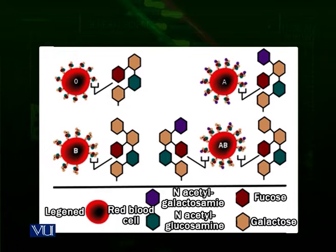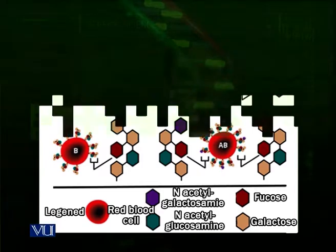The second system is RH. RH is another type of antigen which was first discovered in rhesus monkeys, so it was named RH. This antigen is either present or absent. People who have the RH antigen on their blood cells are called RH positive, and people who do not have it are called RH negative.